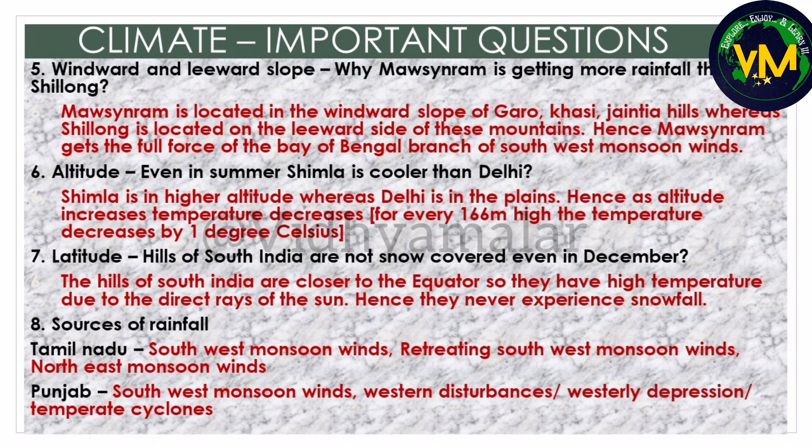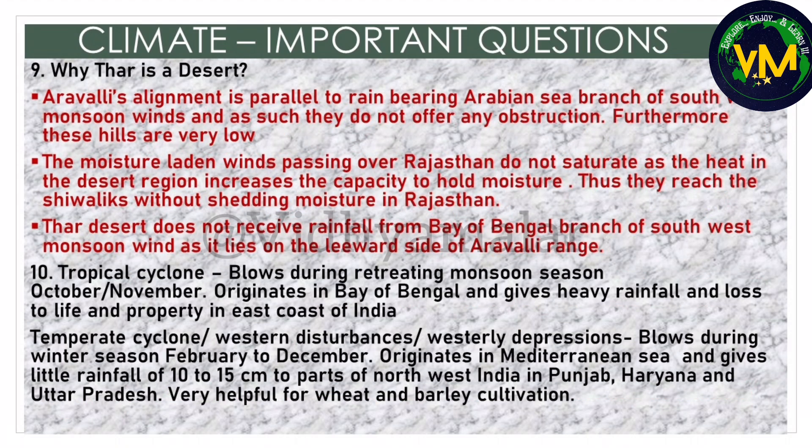For questions related to latitude, like why hills of South India are not snow-covered even in December - South India is closer to the equator, so they have high temperature due to the direct rays of the sun. Regarding sources of rainfall, they may ask about sources for Tamil Nadu or Punjab. A very important board exam question is why the Thar is a desert - it is a repeated question, so learn these three points by heart. There are two types of cyclones in our syllabus: tropical cyclone and temperate cyclone. Temperate cyclone is also called western disturbance or westerly depressions. You should know from where the wind is blowing, during which months, which areas they affect, and what are the effects.